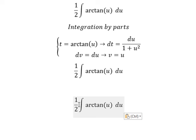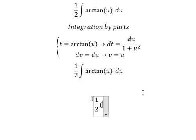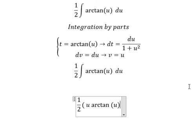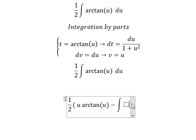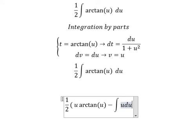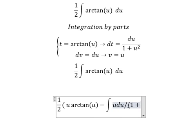We still have 1 over 2, so we keep 1 over 2. We have t multiplied by v, so we have u arctan of u minus dt multiplied by v. So we have the integration u du over 1 plus u squared.